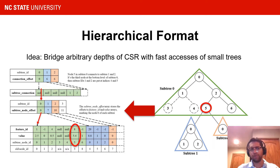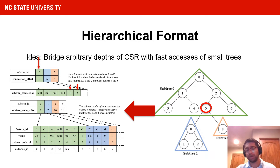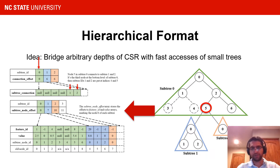Using node five of subtree zero as an example: to find node attributes, we access the subtree node offset array at index zero since this node is in subtree zero. The value stored here points to the beginning of all node attributes of subtree zero. We then add five to this index and arrive at the location of node five's attributes. Since we must continue traversal beyond node five, we access the next subtree IDs from the CSR arrays. The connection offset for subtree zero is zero, and we access indices four and five of the subtree connection array, since node five is the third node in the bottom level of subtree zero and the previous two nodes can each connect to up to two subtrees.